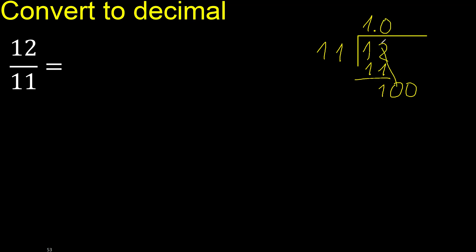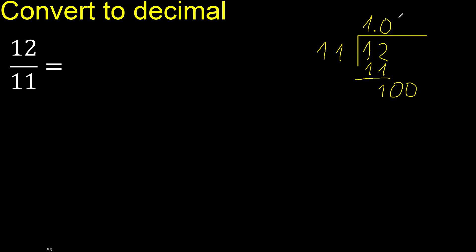0.00 — now 100 is not less. 11 multiplied by 9 is 99, which is not greater. 100 minus 99 is 1. Always complete with 0.